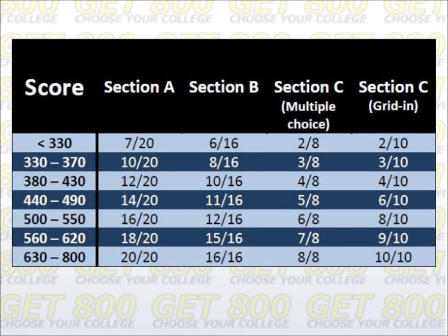For example, a student with a current score of 450 should attempt the first 14 questions from section A, the first 11 questions from section B, the first 5 multiple choice questions from section C, and the first 6 griddins from section C. This is just a general guideline — of course, it can be fine-tuned.